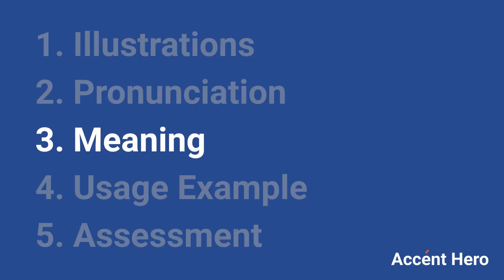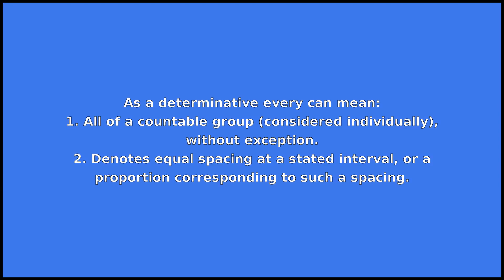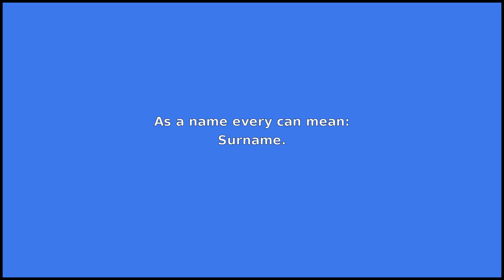Every can be a determinative or a name. As a determinative, every can mean: 1. All of a countable group without exception. 2. Denotes equal spacing at a stated interval, or a proportion corresponding to such a spacing. 3. Denotes an abundance of something. As a name, every can mean a surname.